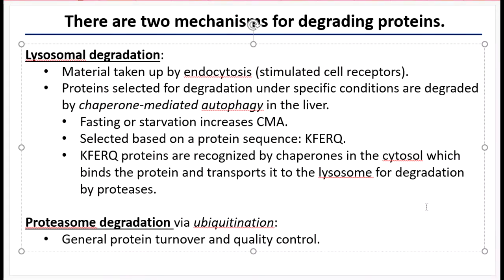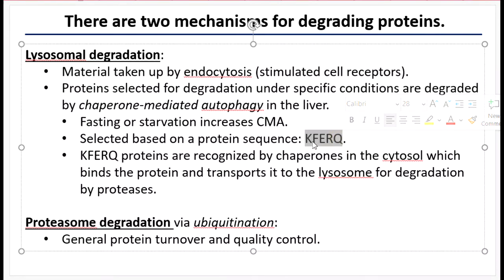Sometimes your body requires an increase in protein degradation, which would activate the lysosome. In other situations, lysosomal degradation rates are very low because there's no metabolic circumstance that warrants it. Proteins are selected for degradation when you're fasting, starving, or don't have access to glucose or glycogen. Proteins are selected based on a specific protein sequence — five amino acids have to appear in a specific order, called the KFERQ motif. That specific residue is recognized by chaperone proteins floating around the cytosol, which bind to it and transport it to the organelle called the lysosome for degradation.